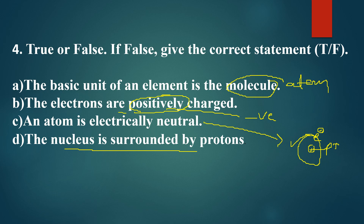Fourth: the nucleus is surrounded by protons. This is false — the nucleus contains neutrons and protons, while electrons surround the nucleus. So the correct statements are: the basic unit of an element is atom; electrons are negatively charged; atom is electrically neutral; and the nucleus is surrounded by electrons.